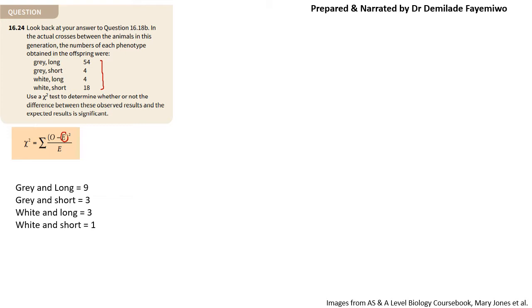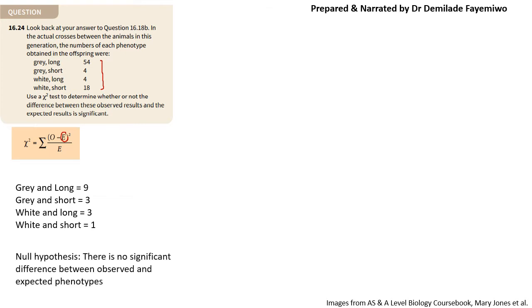When we did the previous question, we got ratios of: gray and long — 9, gray and short — 3, white and long — 3, and white and short — 1. For a chi-squared test, the null hypothesis is always that there is no significant difference between the observed and the expected. So if asked in the exam, the null hypothesis is that there is no significant difference.